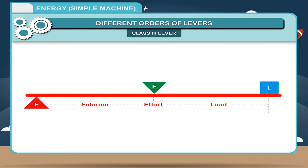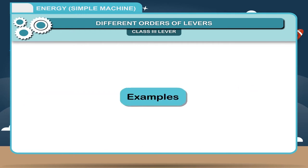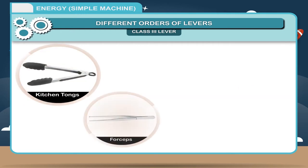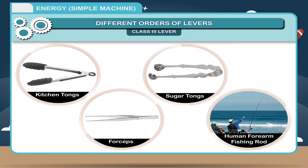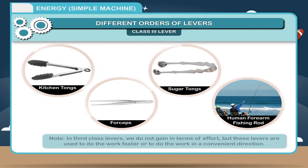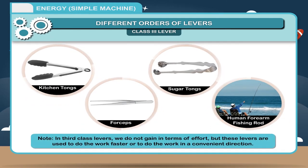Class 3 lever: In this class of lever, the effort E lies between the fulcrum F and the load L. Examples: Kitchen tongs, forceps, sugar tongs and human forearm fishing rod etc. are the examples of class 3 lever. Note: In third class of levers, we do not gain in terms of effort, but these levers are used to do the work faster or to do the work in a convenient direction.